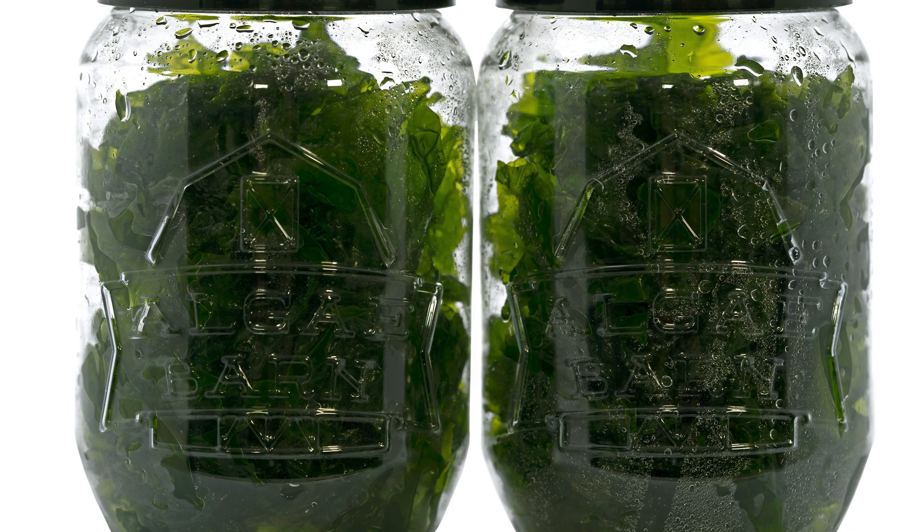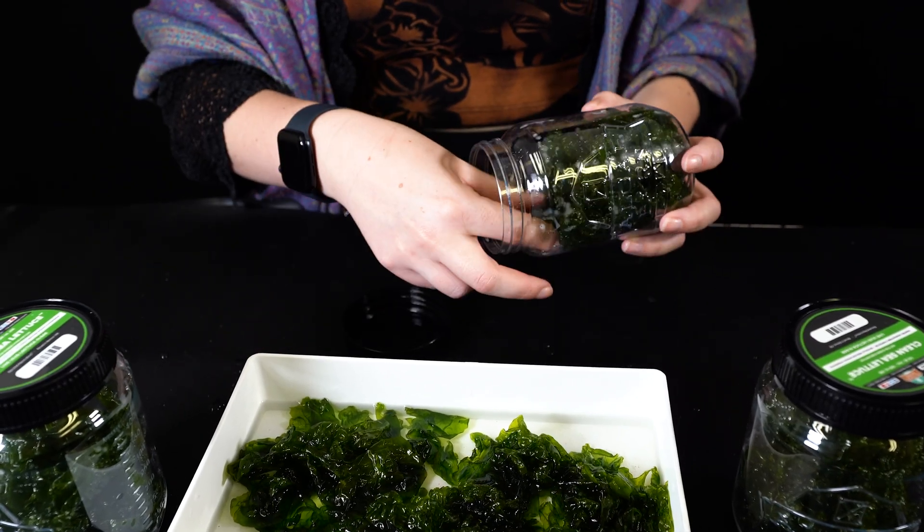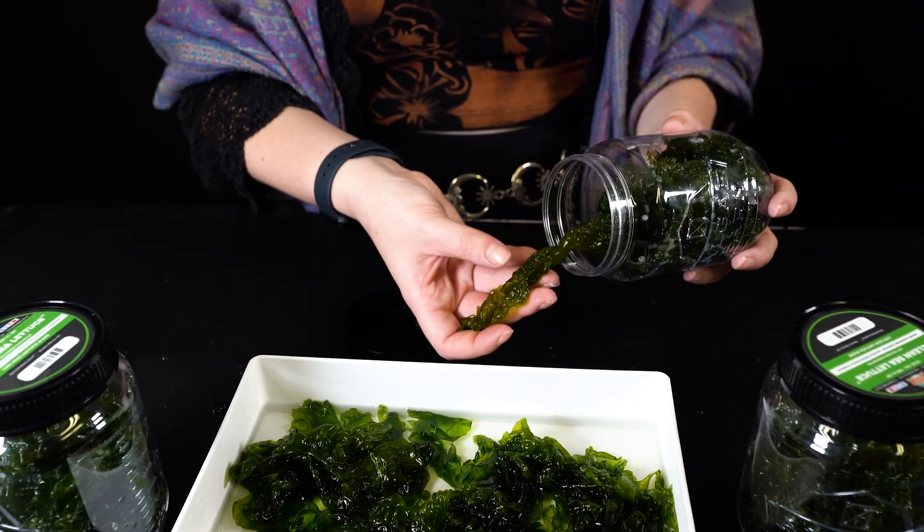The Ulva you receive from Algae Barn is homegrown by us. Therefore, it is intended specifically for aquarium use. Ulva can be purchased from Algae Barn in 2 oz, 4 oz, or 8 oz units. It'll arrive wet but not submerged in a jar or bag depending on the size.